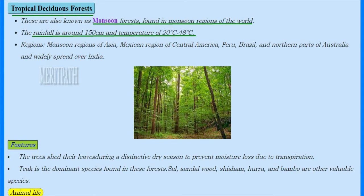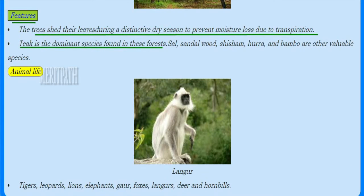Tropical deciduous forests, also known as monsoon forests, are found in the monsoon regions of the world. Rainfall is around 150 to 180 centimeters and temperature ranges from 20 to 48 degrees centigrade. They are found in Asia, the Mexican region of Central America, Peru, Brazil, northern Australia, and India. Trees shed their leaves during the dry season to prevent moisture loss through transpiration. Teak is the dominant species; sal, sandalwood, shisham, and bamboo are other valuable species. Animals found here include tigers, leopards, elephants, foxes, langurs, deer, and hornbills.